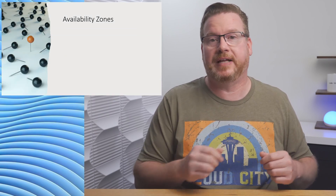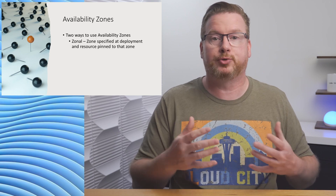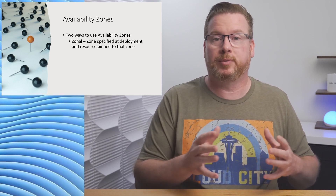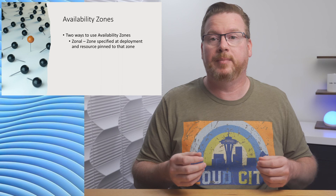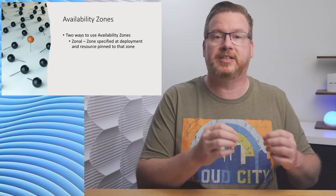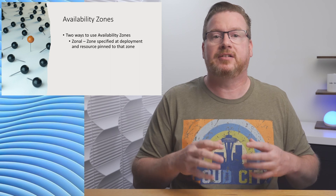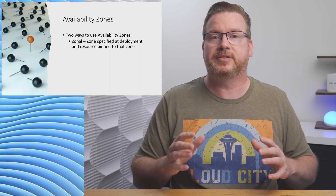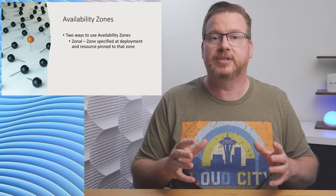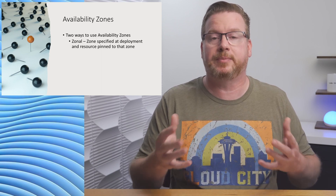There are two ways to use availability zones. First, some resources are deployed directly to a zone — this is what we would do if we're deploying a new VM. We have to select or pin the resource to a specific zone in the region. These are called zonal services. Zonal services support availability zones, but we manually select what zone the service is deployed to.